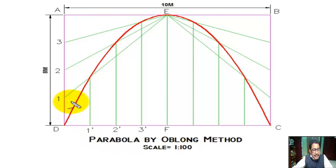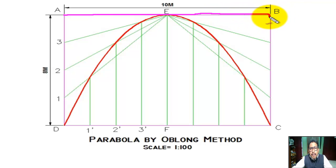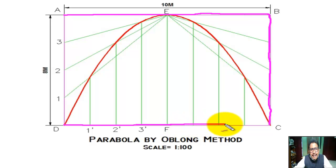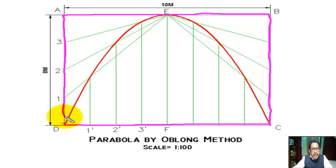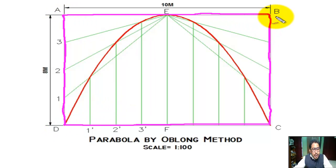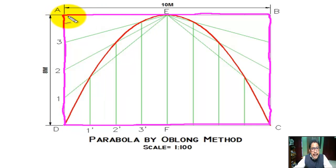We make a rectangle ABCD. Here AB equals 100 millimeters and AD equals 80 millimeters. But we write in the drawing AB equals 10 meters and AD equals 8 meters.